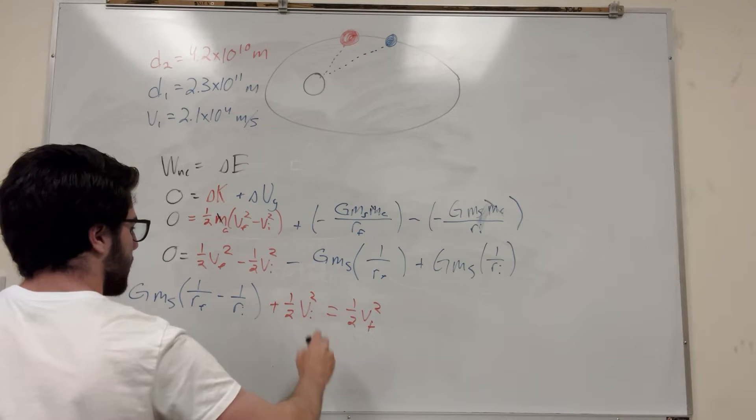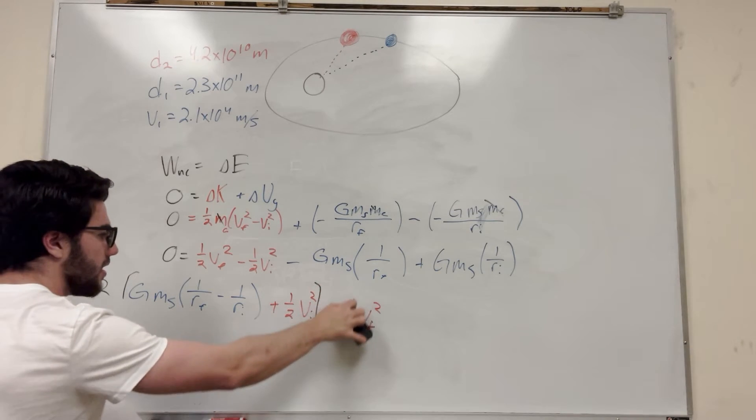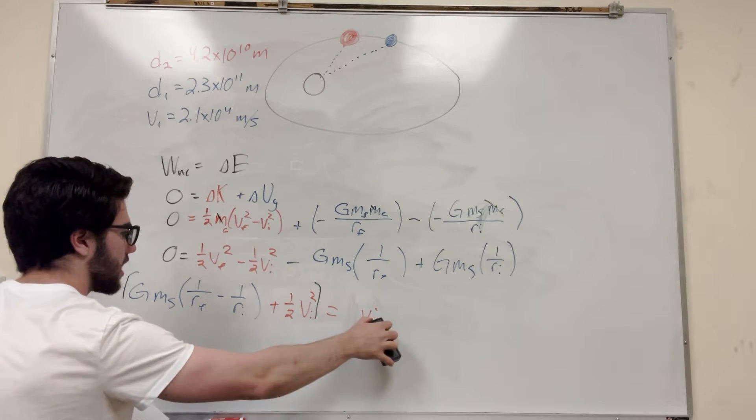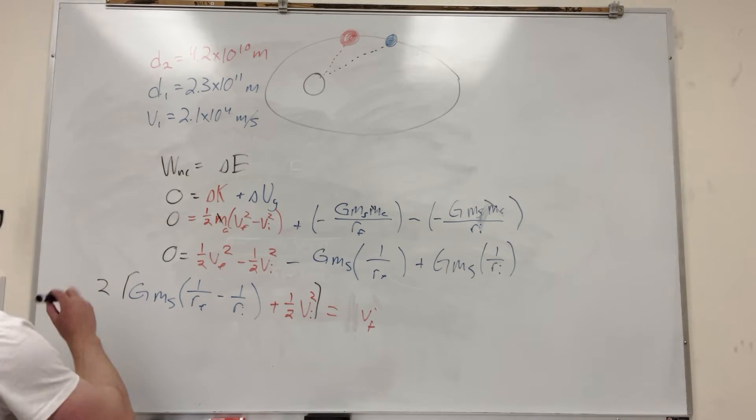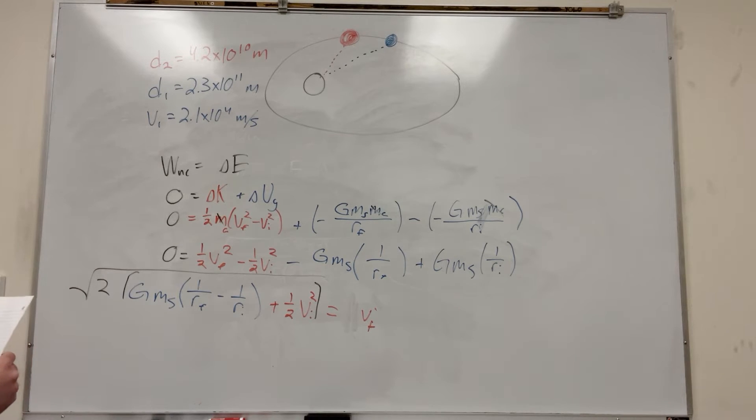So now what I'm going to do is I'm going to take all of this and I'm going to multiply by two to get rid of that one half. And then I'm going to take the square root of it to get rid of this square. And then we get velocity final by itself and make sure that this is the right formula. So G, M S, or M S of the sun and whatever radius final and our radius initial plus one half velocity initial squared. Yes.